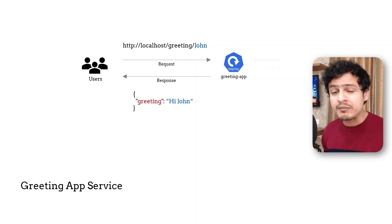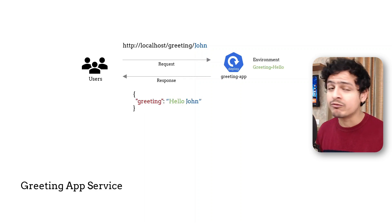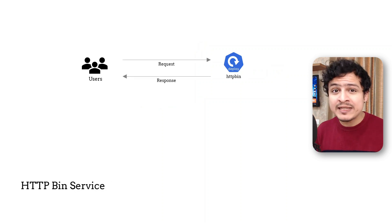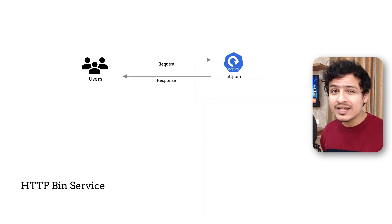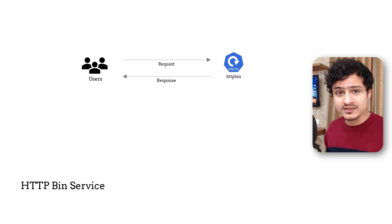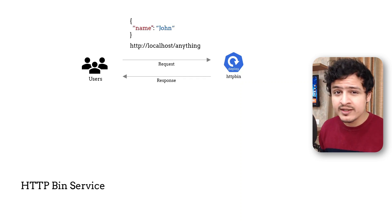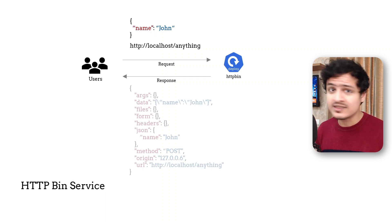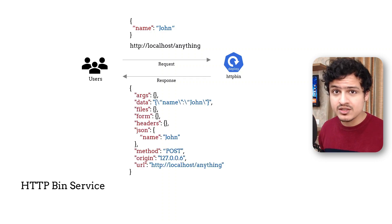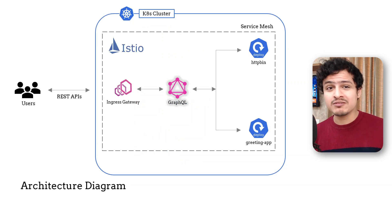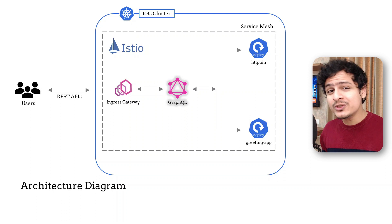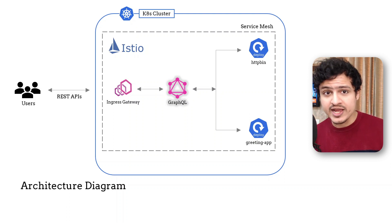We can change its greeting by modifying an environment variable. The second service is HTTPbin. For those who don't know about it, it's kind of like an echo server which returns whatever it gets in its request. So if I send a POST request with this body, I will get a response which looks something like this. The final one is a GraphQL server which we will use to join the previous APIs together.